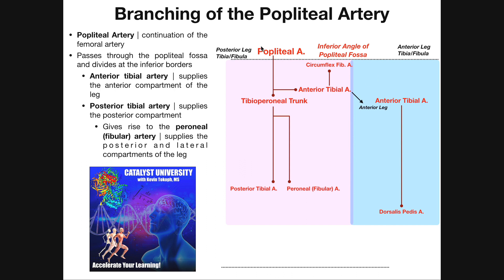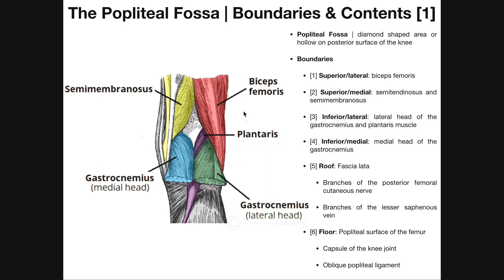We have our popliteal artery, which is the artery that runs down the popliteal fossa, existing on the posterior aspect of the knee. The fossa is this kite or diamond-shaped space on the posterior part of the knee, and we see its boundaries — those were covered in previous videos.